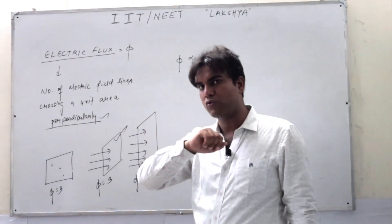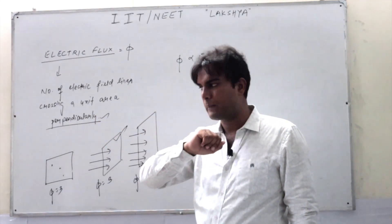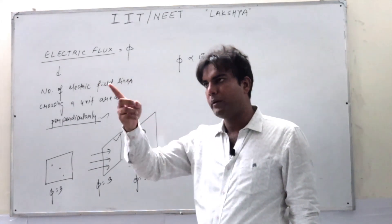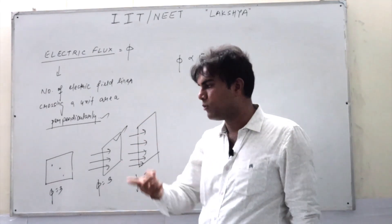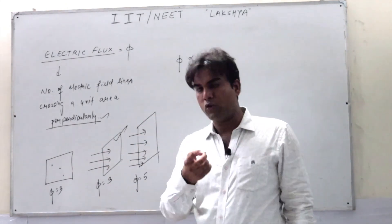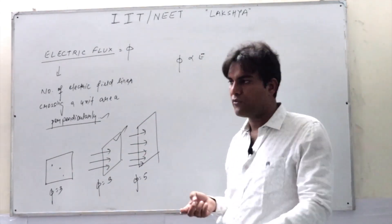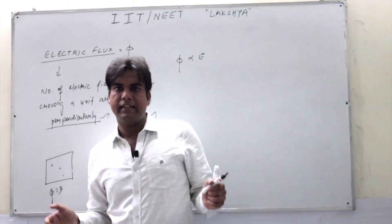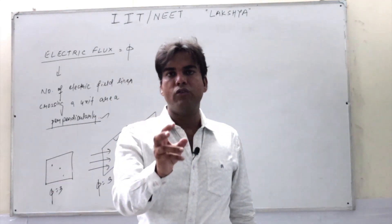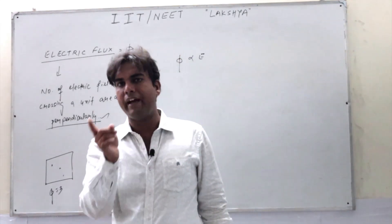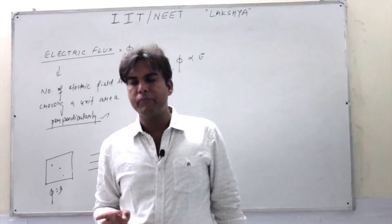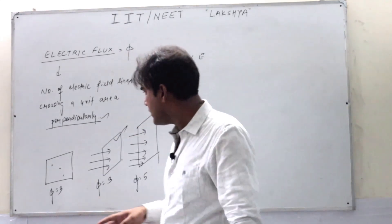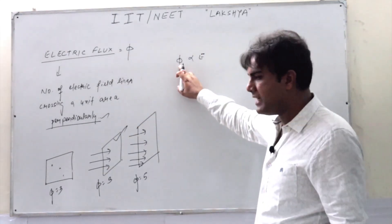Because what is the formula of electric field intensity? KQ by R² for a point charge. So if the magnitude of charge is more, electric field intensity will be more. And if electric field intensity is more, number of lines will be more — we have seen in the properties of electric field lines that number of lines depends upon the magnitude of electric field intensity. More the value of E, more will be the number of lines. So phi is proportional to E.